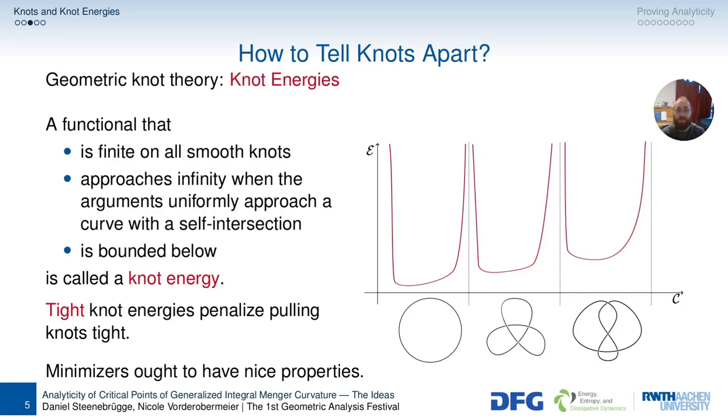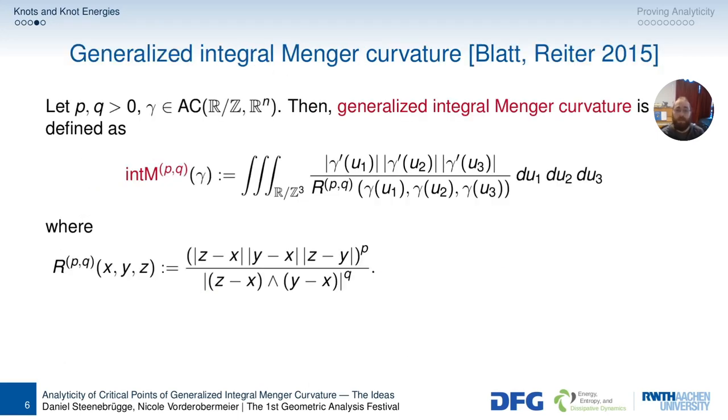And for a long time it has been expected that these minimizers of knot energies, so local minimizers, have nice properties and then can be viewed as a representative of the class. And you guessed it, or you paid attention in my abstract video. At least in our case it works out.